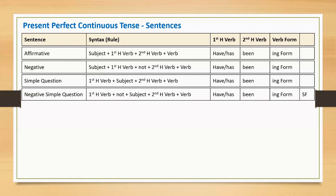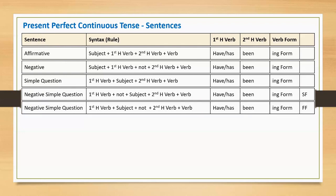A present perfect continuous negative simple question starts with the short form of the first helping verb 'have' and the word 'not', followed by subject, second helping verb, and main verb. For the long form, it begins with the first helping verb, subject, the word 'not', second helping verb, and main verb. If we use the long form, the pessimistic word 'not' is always used before the second helping verb.